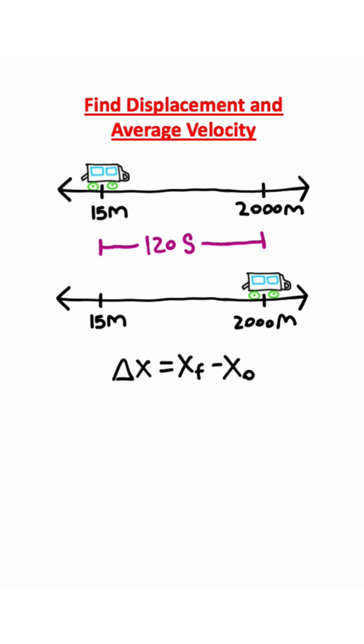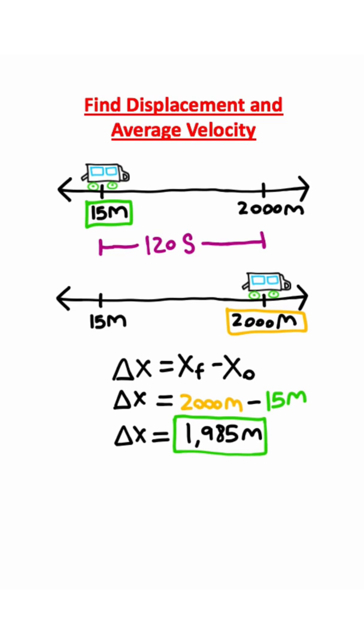Now to find displacement, it's final position minus initial position. So our final position is 2,000, our initial position is 15. That's going to give us 1,985 meters.